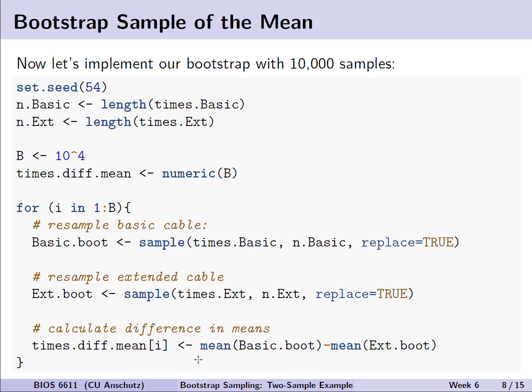So let's implement the bootstrap sample of the mean and calculate, then, the difference of these means across 10,000 resamples. Again, as always, we start by setting our seed for reproducibility so we can recreate our bootstrap sample in the future and not get subtly different estimates each time we run our code.